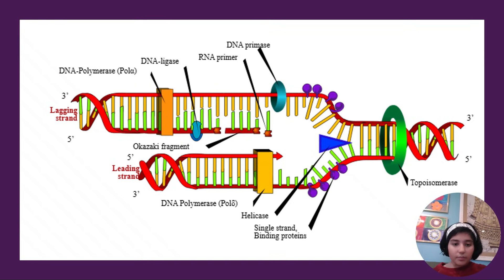The next is the lagging strand and the leading strand. So as I said earlier, DNA is read from 5 prime to 3 prime and 3 prime to 5 prime. And also as I mentioned earlier, new nucleotides are always added only to the 3 prime end.